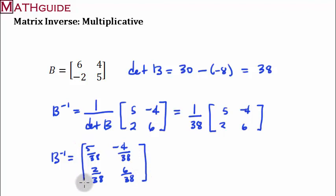All right. So our last step, we could reduce some of these fractions. I cannot reduce 5 over 38. Here we're going to get 2 over 19. Here we're going to get 1 over 19. Here we're going to get, let's see, 3 over 19. Yep. Can't reduce it any more than that. And there you go. We've got our answer.